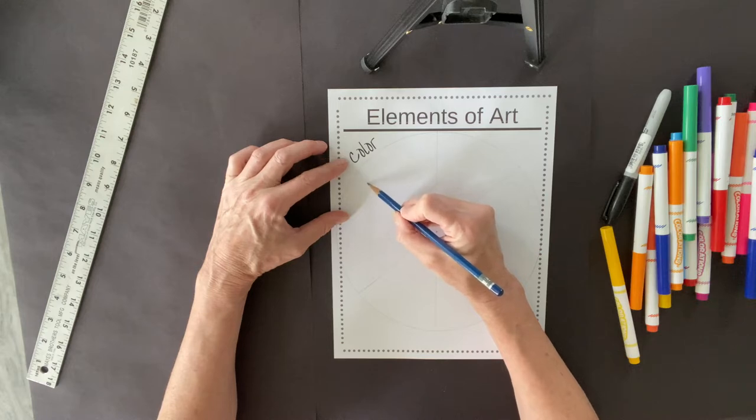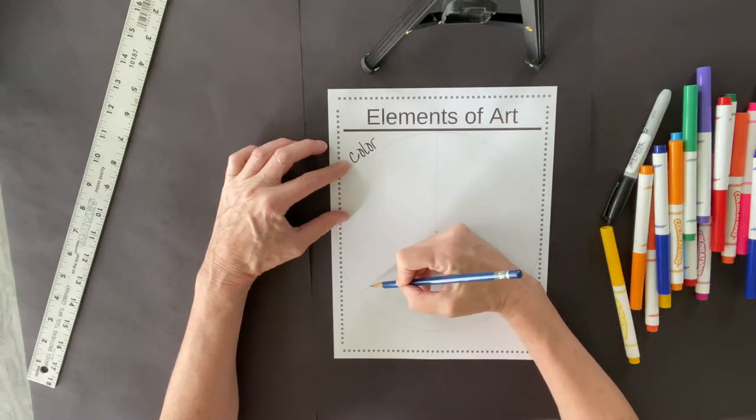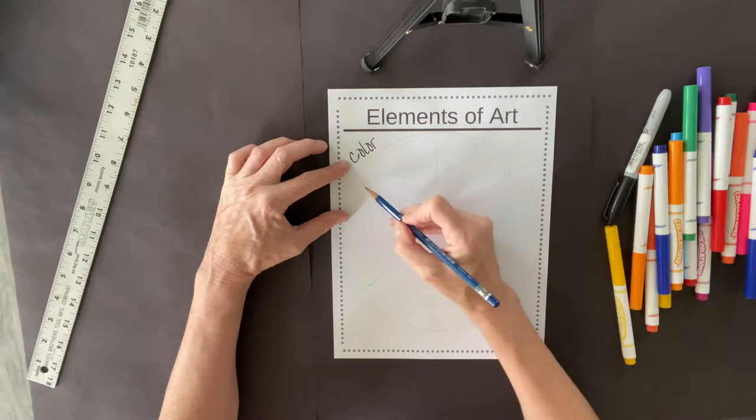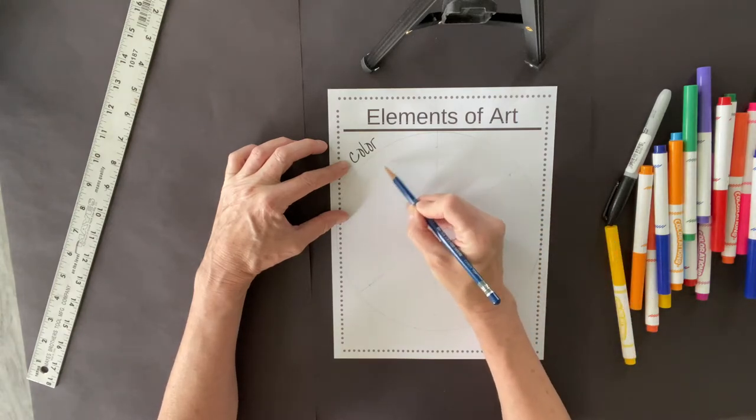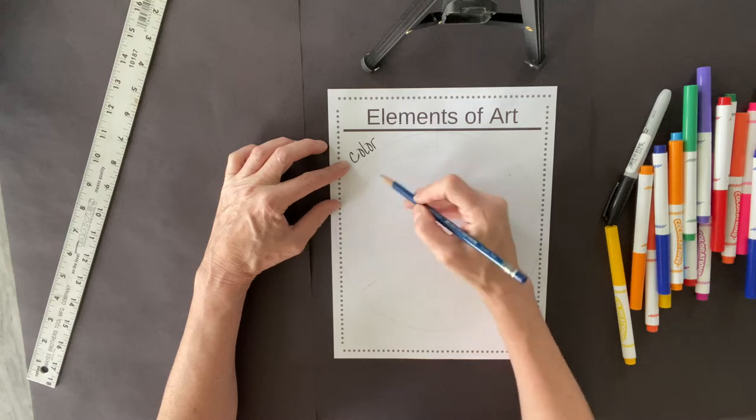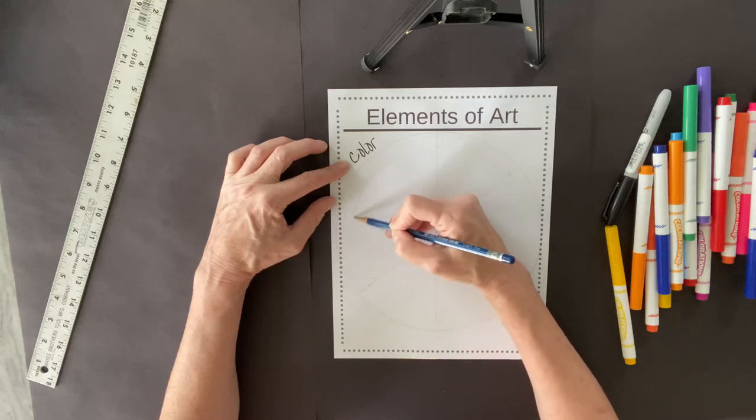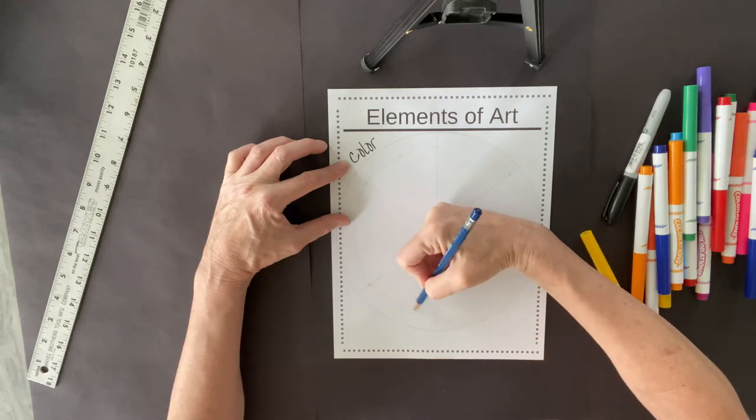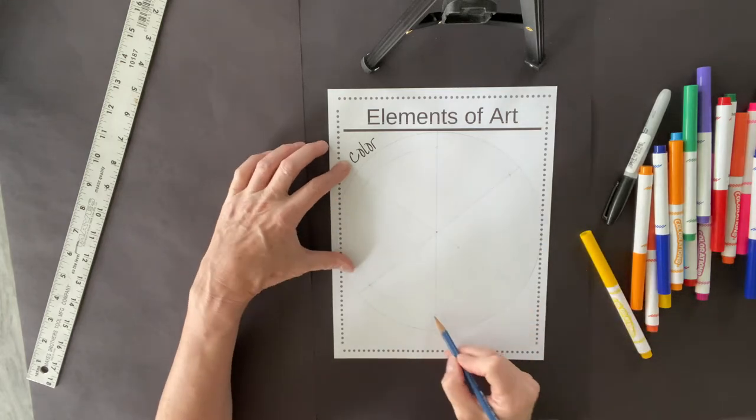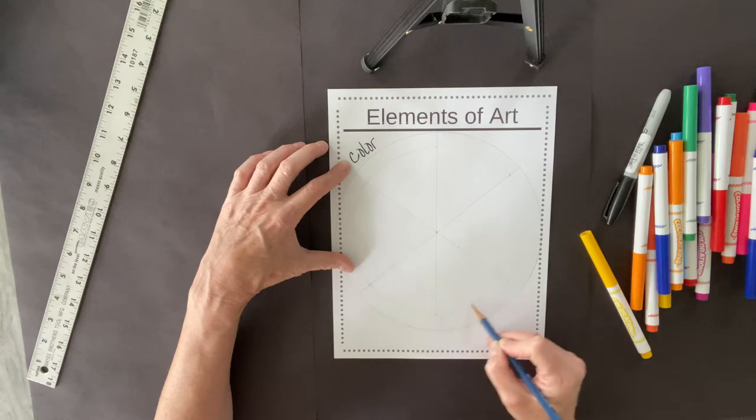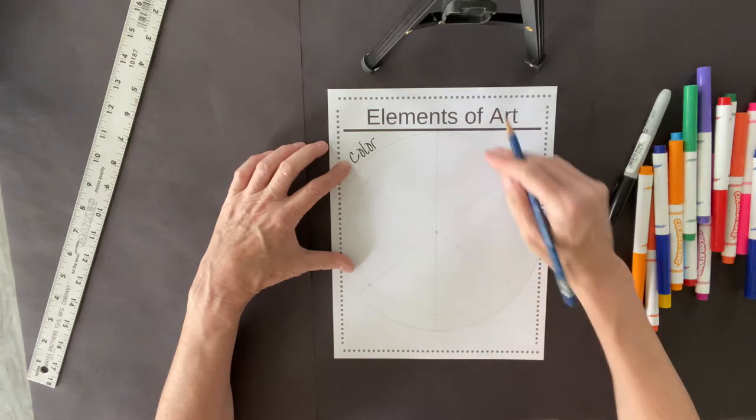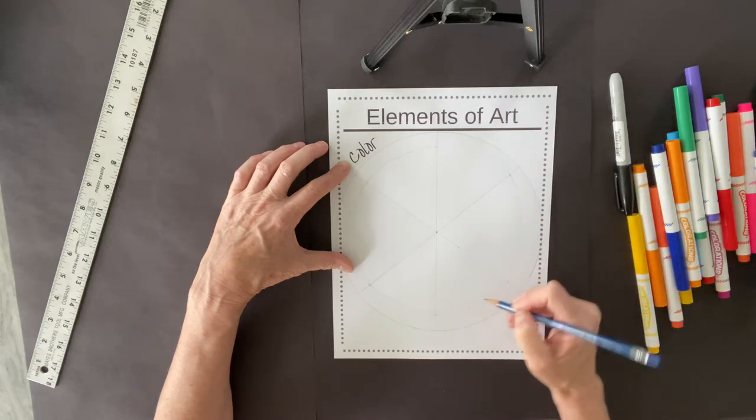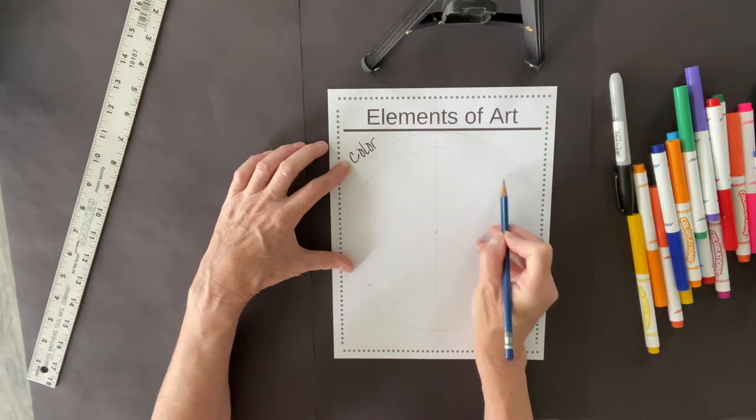Now what I'm going to do is put a little mark about an inch away, and I'm going to draw another line around. Remember, it doesn't have to be exact. Just do the best you can, and then I'll close it up here,